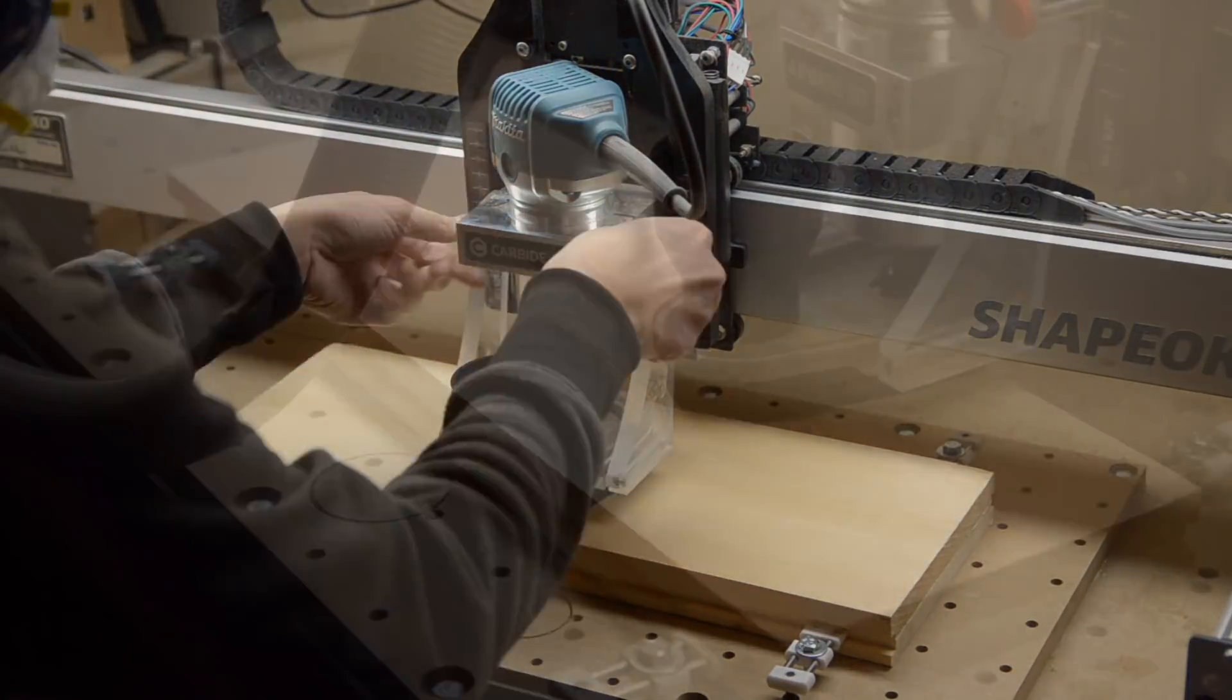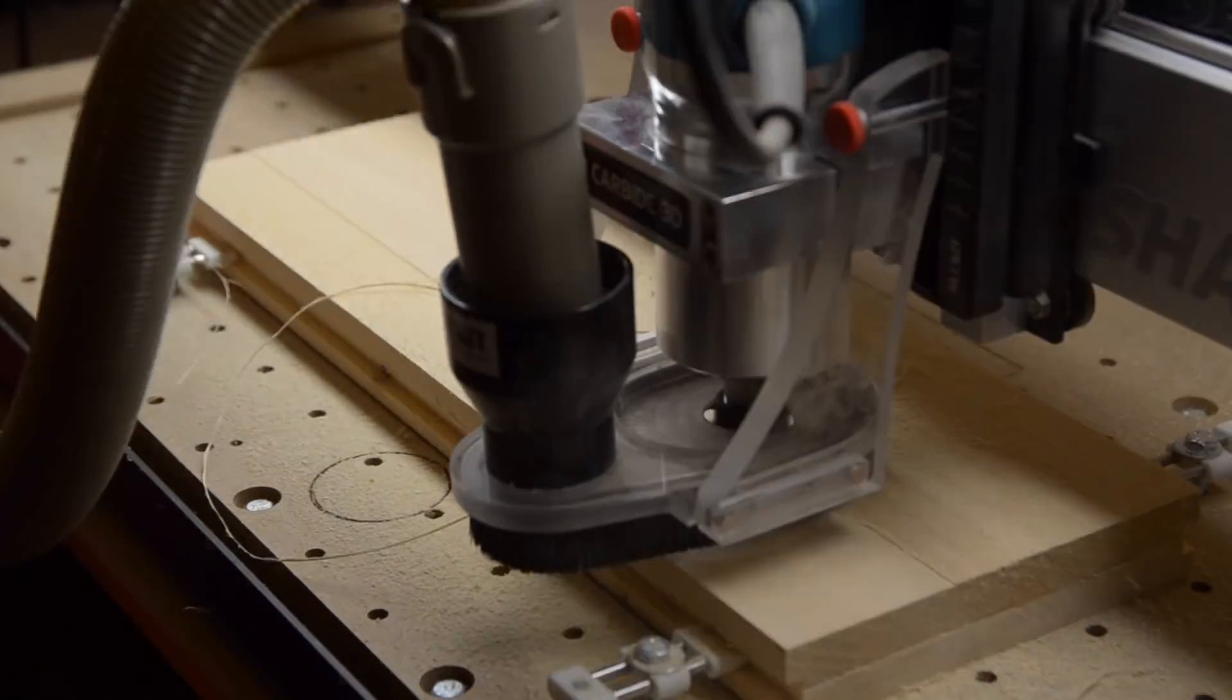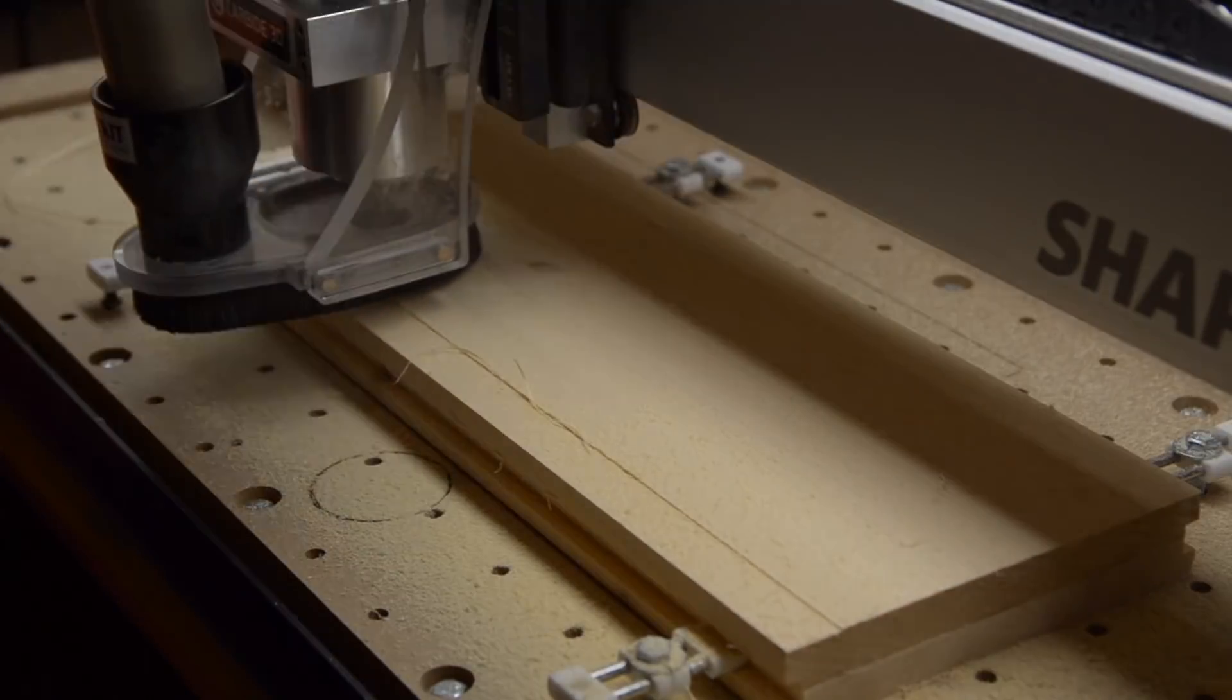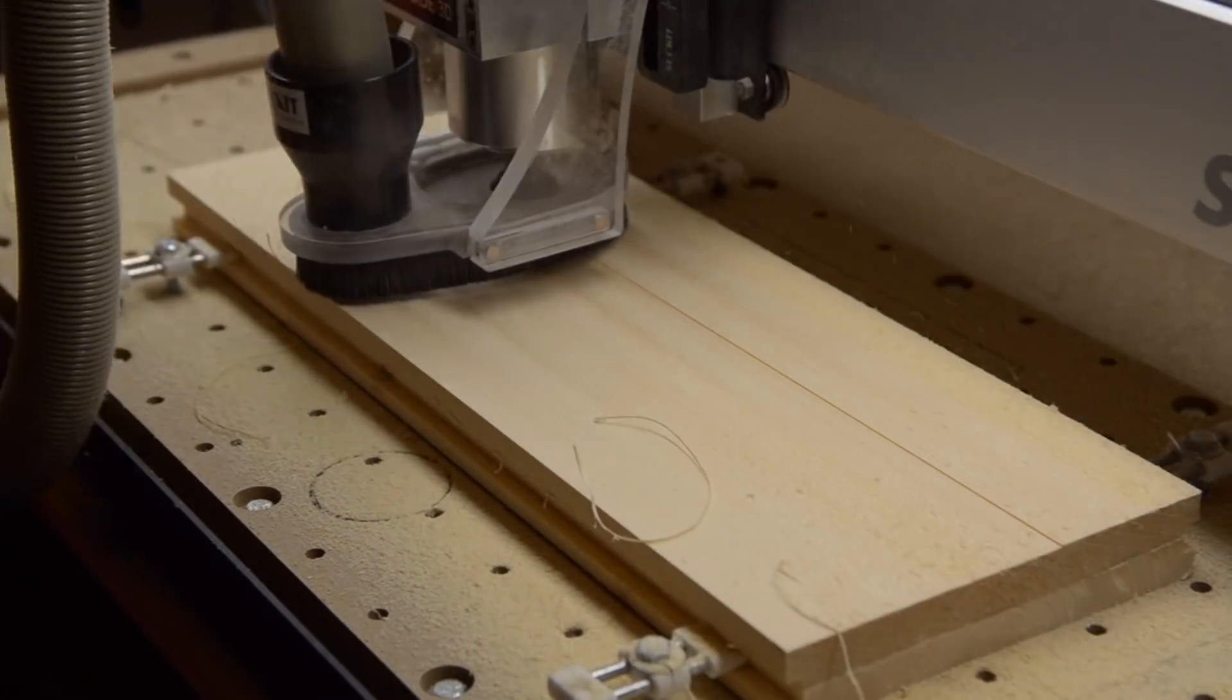On the flip side of my stock, I ran a facing operation using one millimeter step downs at about a hundred inches per minute. In pine, I had a beautiful surface finish. If you were using harder wood though, you'd probably want to take slightly shallower passes.